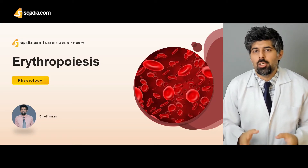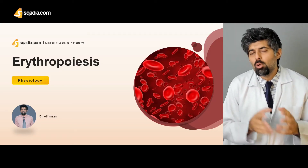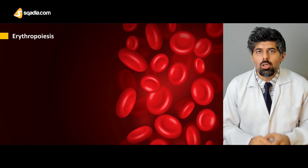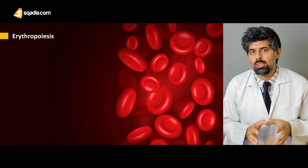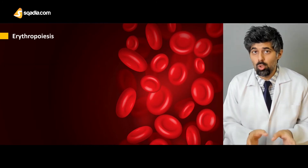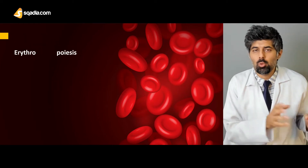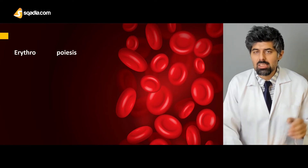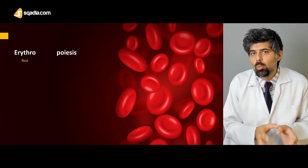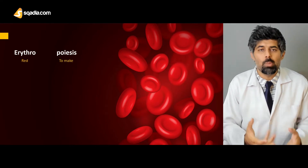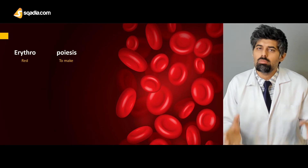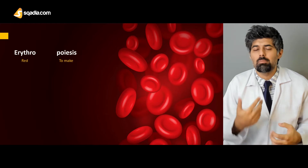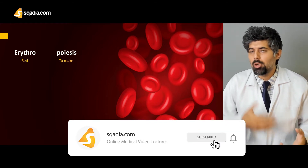Hello everyone and welcome to scadia.com. Today's lecture on physiology is erythropoiesis, so let's get on with it. The word erythropoiesis is made up of two Greek words: erythro and poiesis. Erythro means red or the color red, while poiesis means to make or to form something. Together, the transliteration would be 'to make something red.'